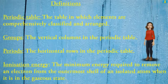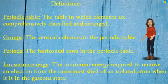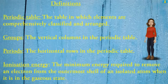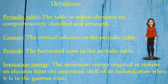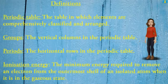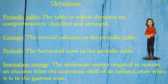Definitions: Periodic table — the table in which elements are comprehensively classified and arranged. Groups — the vertical columns in the periodic table. Periods — the horizontal rows in the periodic table. Ionization energy — the minimum energy required to remove an electron from the outermost shell of an isolated atom when it is in the gaseous state.